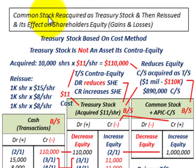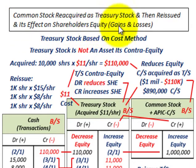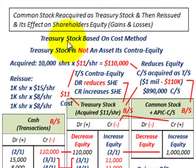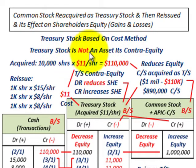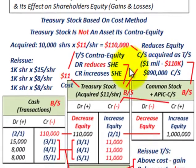We're going to look at common stock that's reacquired as treasury stock, then reissued, and its effect on shareholders' equity. We'll look at how we calculate or account for any gains or losses when we reissue this treasury stock. This treasury stock is going to be based on the cost method. Treasury stock that's reacquired is not an asset — it's a contra equity account.